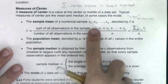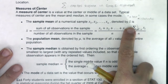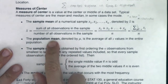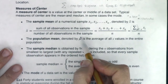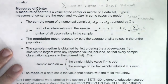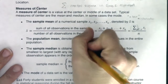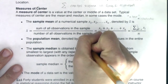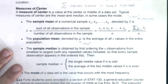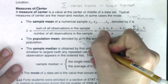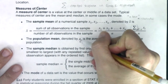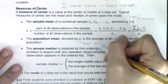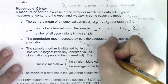So x-bar: add up all of your values, divide by sample size. Now the population mean is denoted by mu. If you say this symbol out loud, we would say mu. It kind of looks like a fancy M, or also like a fancy U. This is your population mean.